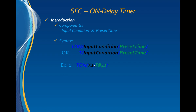For example, an on-delay timer on the variable x1 for a preset time of 4 seconds, or an on-delay timer on the variable x2 for a preset time of 500 milliseconds.